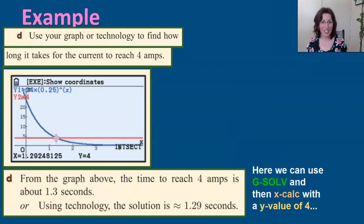The last part of the question: using your graph or technology, find how long it takes to reach 4 amps. So which variable are we solving for? 4 amps is the I, so we're solving for I. In our graphics calculators, we've got the G-solve option, that we're trying to find the X value given a Y value. So we're using X-calc, calculating the X value, and that's going to ask us for the Y value of 4. And the answer that it will give you back is 1.29.